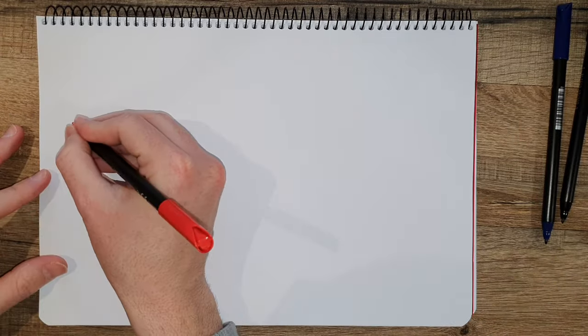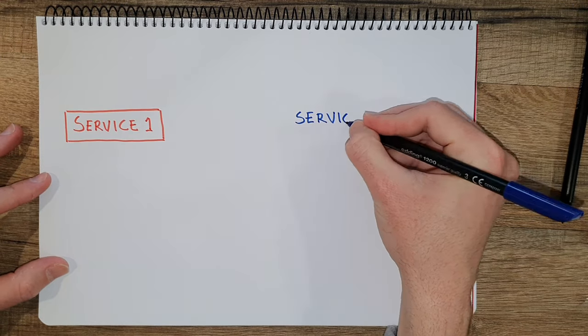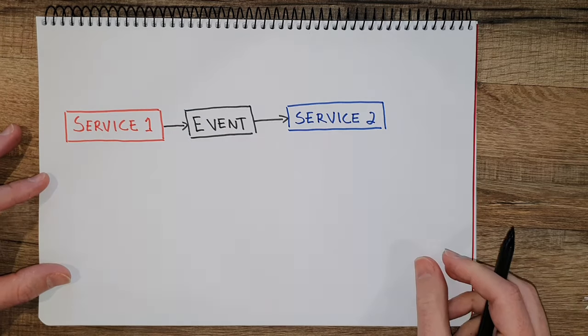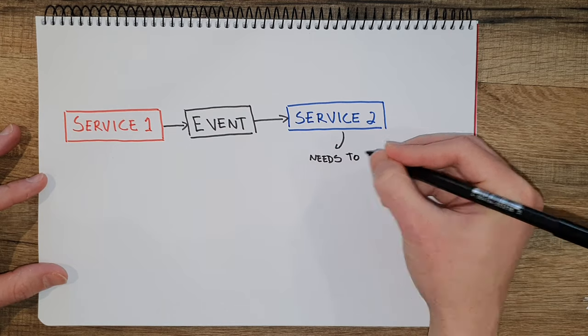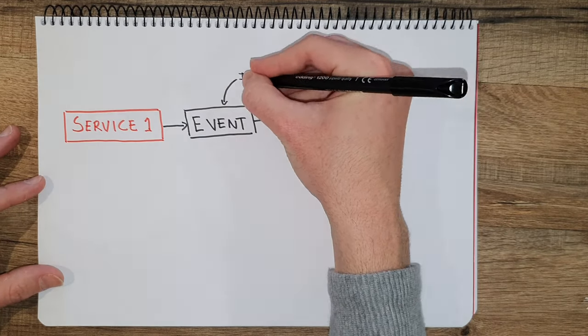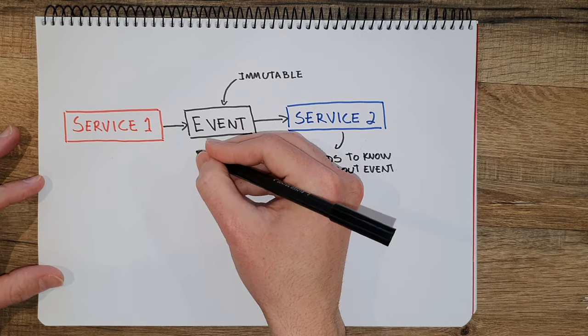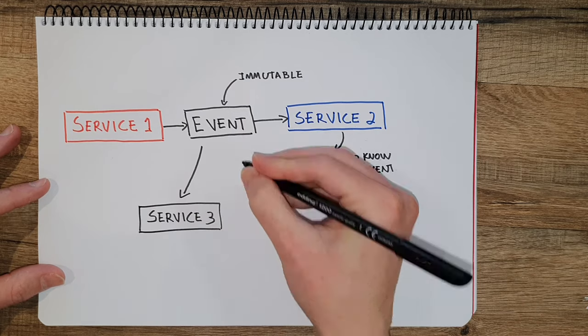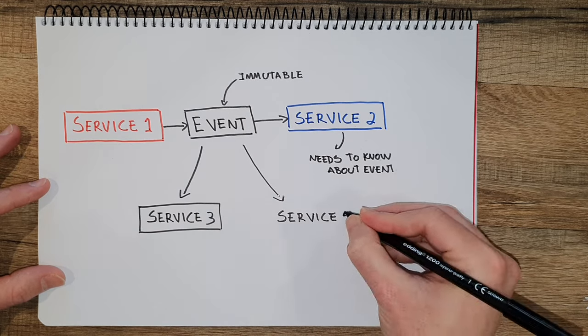In an event-driven architecture fashion, we will still have service1 and service2, but instead of communicating directly from service1, what we would do is to send an event. Now service2 needs to know about this event and process it. In this way, we have inverted dependencies and also decoupled them, because service1 doesn't need to know that there is a service2, and neither does service2 need to know about service1. They just need to know about producing and consuming this event. Additionally, since events are immutable, they can be processed in parallel with other systems too — this event can be consumed by additional services if we want to execute additional things.